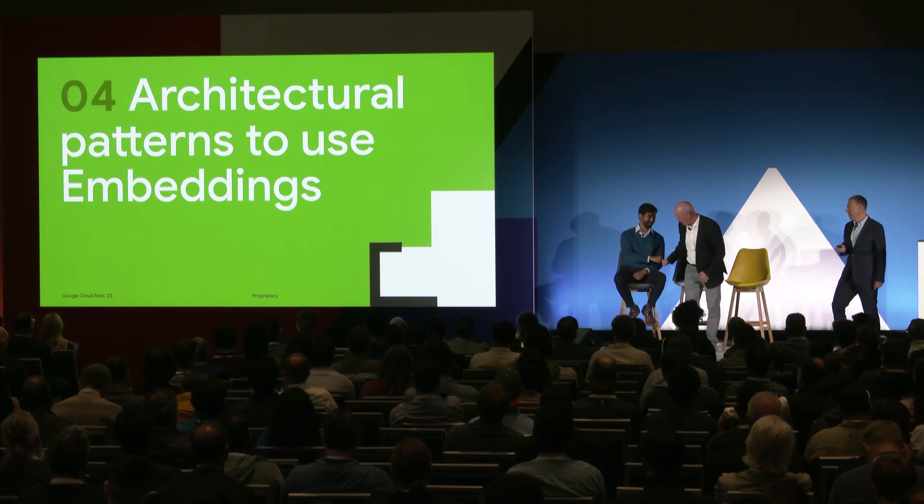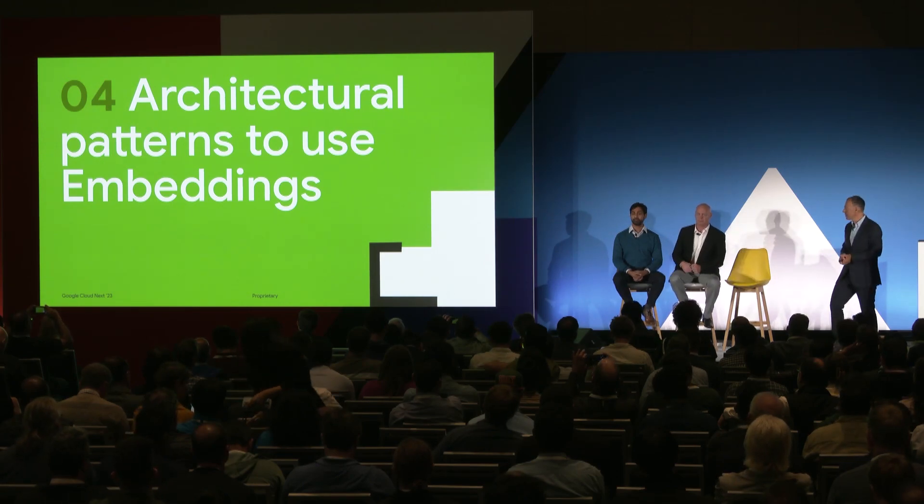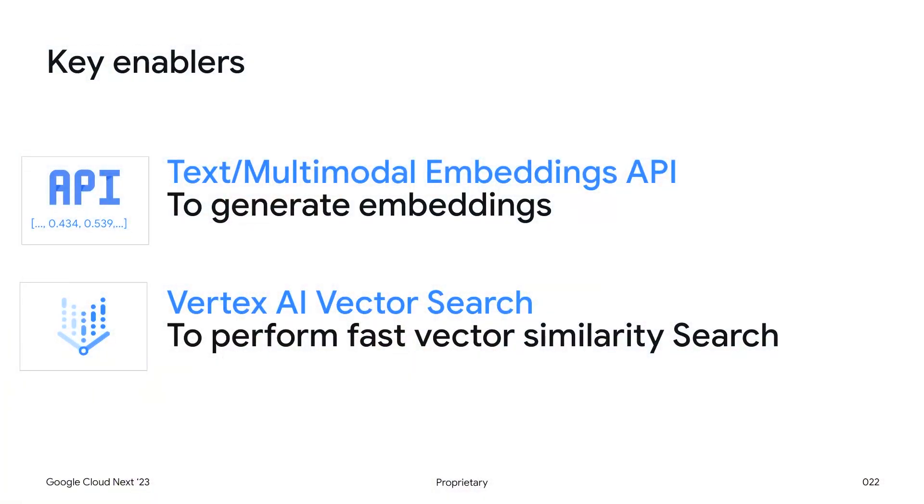Thank you, Eric. It's really exciting to see how Verwe is using AI and embeddings to extract novel insights from unstructured data. Now let's explore the architectural patterns commonly used to put embeddings to work. To achieve embedding similarity in production at scale, we rely on two key enablers: one, the Vertex AI embeddings API to generate embeddings, and two, the Vertex AI Vector Search to perform fast and scalable embedding similarity search.